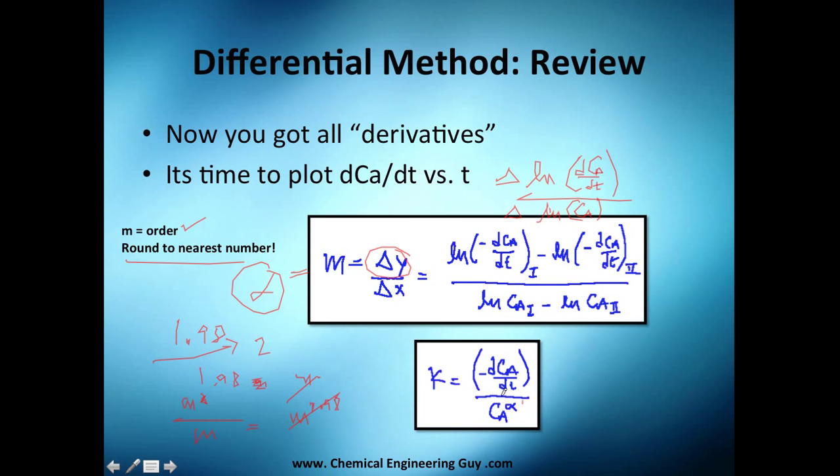Then after you get alpha, substitute this concentration of A to the alpha power and find any of the values you got here.